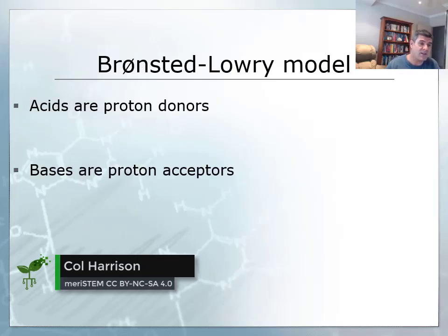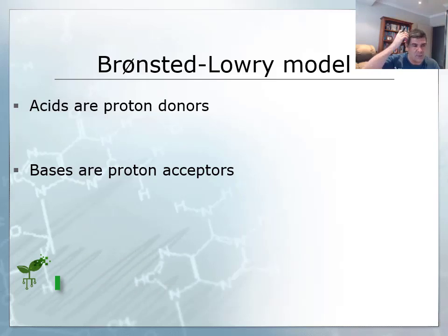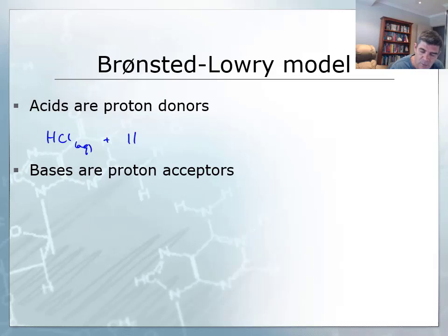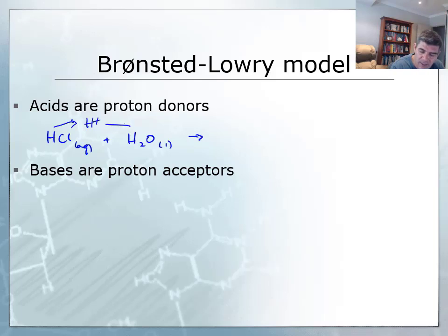It's the Bronsted-Lowry definition that actually solves this problem, and it solves the problem for both examples. It relies on the fact that acids are proton donors. The simplest way to demonstrate the Bronsted-Lowry model is to say, if we were to put a molecule of hydrogen chloride into water, what we would notice is the H+ ion is going to come from here — it's going to be donated from the molecular species.